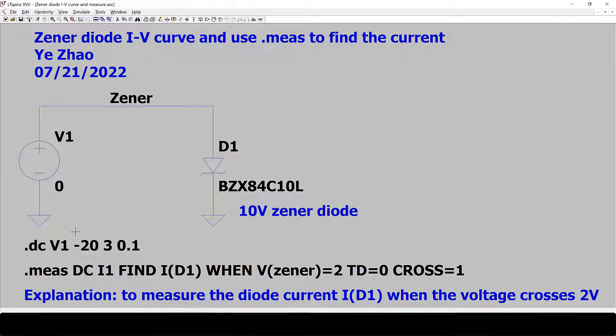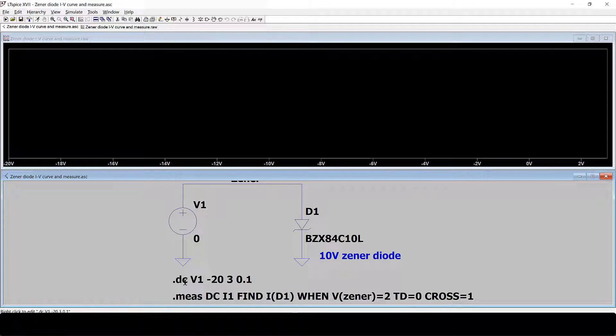First, we want to use the DC sweep to get the I-V curve of this diode. You can run the simulation. So we are going to DC sweep over voltage V1.